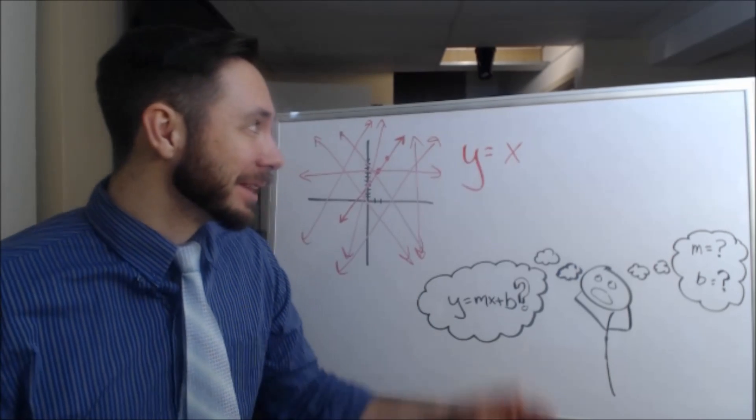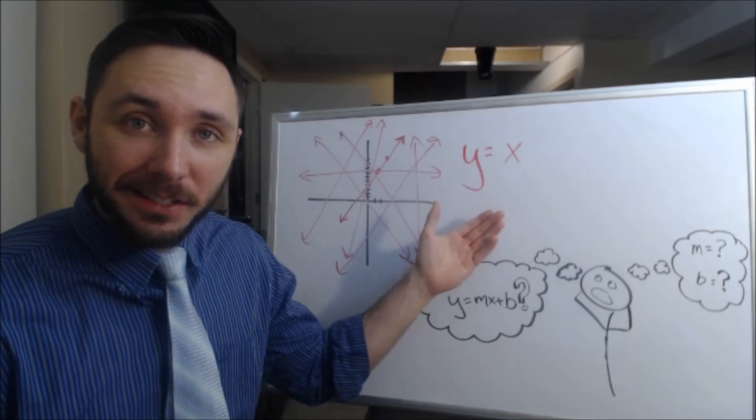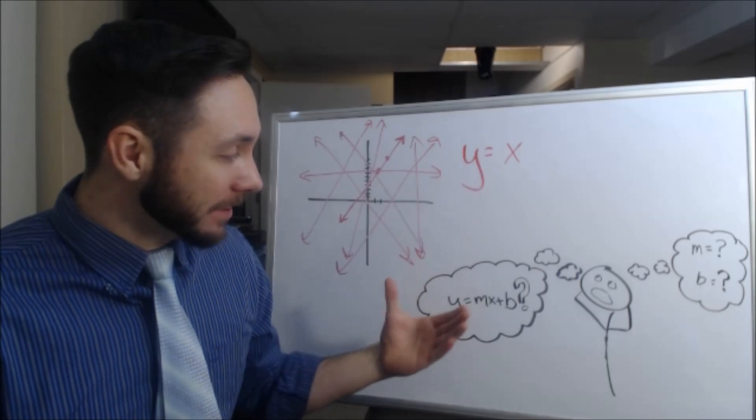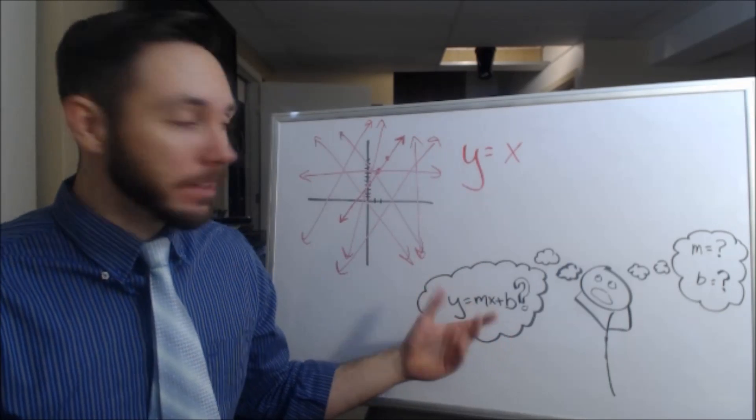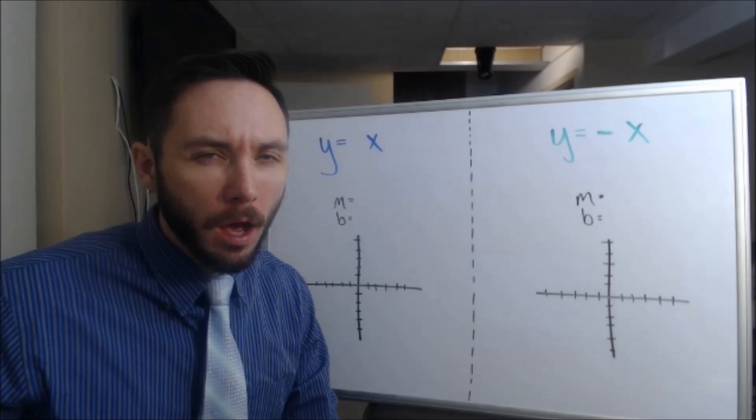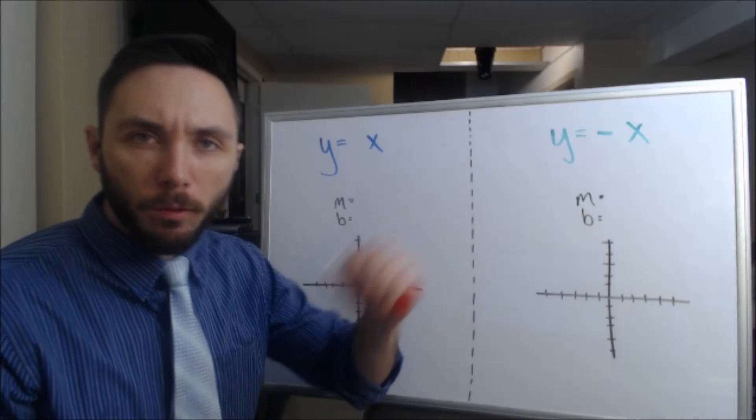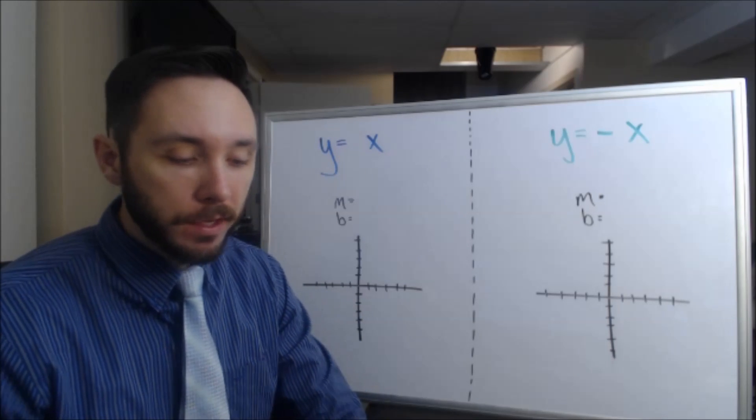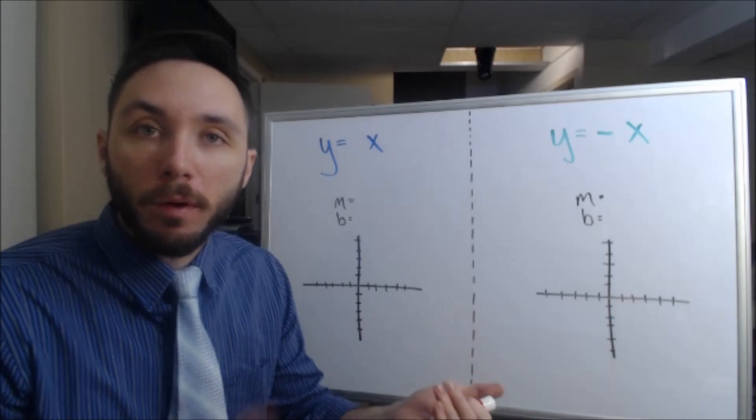But then all of a sudden we throw something like y = x at you and you're like, what? Is this y = mx + b? Is it even a line? What's my m? What's my b? How do I graph this thing? Alright, so let's start with y = x and y = -x because those are easiest to compare to y = mx + b.